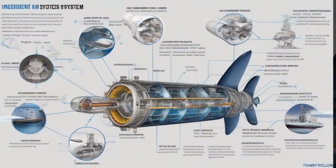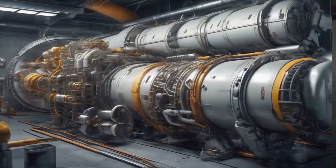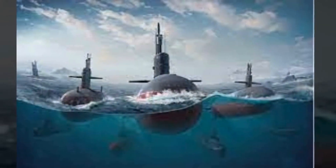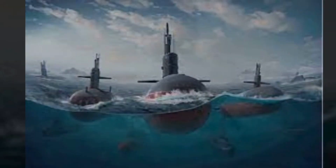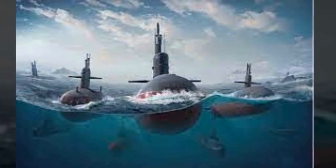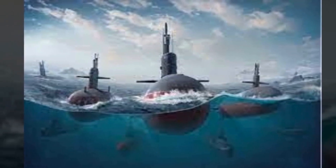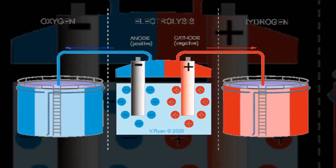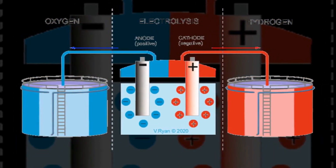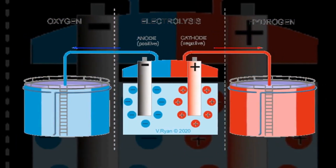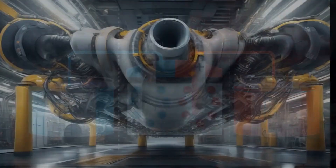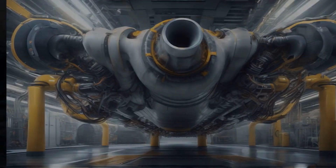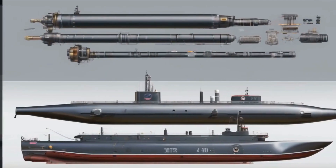Types of AIP. There are several different types of AIP systems, each with its own advantages and disadvantages. Some of the most common types include fuel cell AIP. Fuel cell AIP systems use hydrogen and oxygen to generate electricity through an electrochemical process. This type of AIP is very quiet and efficient, but it can be expensive and complex.